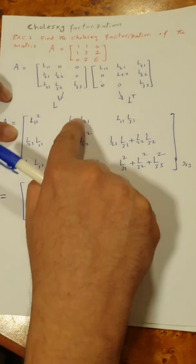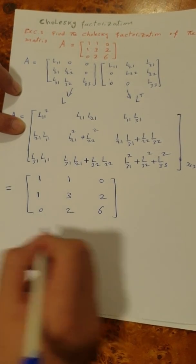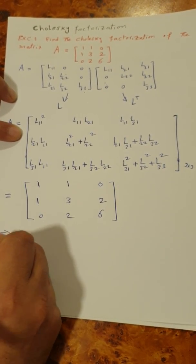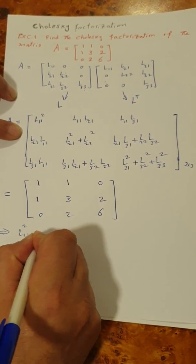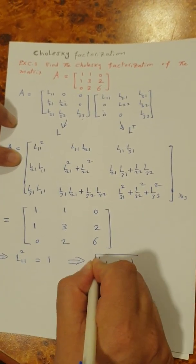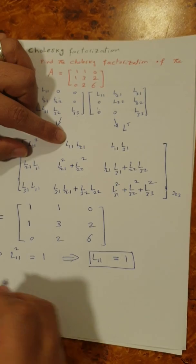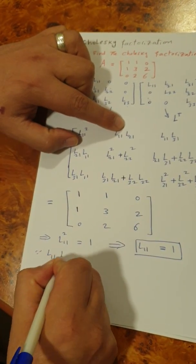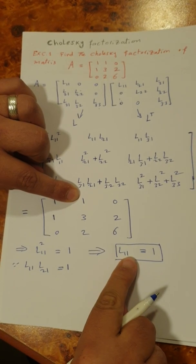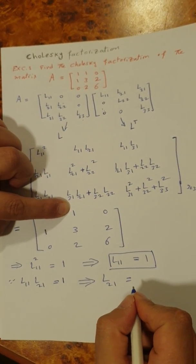Comparing the first elements: L11 squared equals 1, so L11 equals 1. Next, since L11 times L21 equals 1 and L11 equals 1, we find that L21 also equals 1. We now know these two elements of the L matrix.